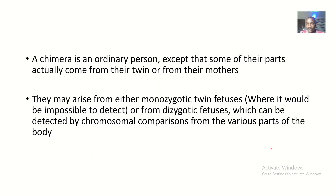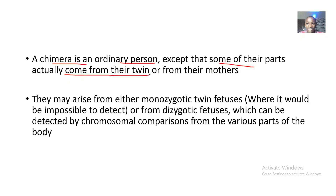We've discussed the concept of chimerism. A chimera is an ordinary person except that some parts of their body actually come from their twin or from their mother. Maybe they are developing in the womb as a twin and some parts of one twin fuse with the parts of the other twin.